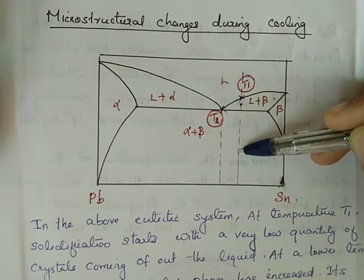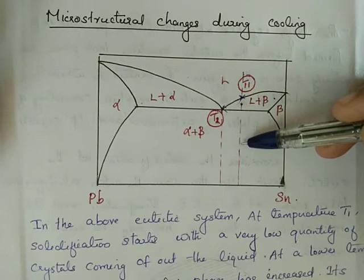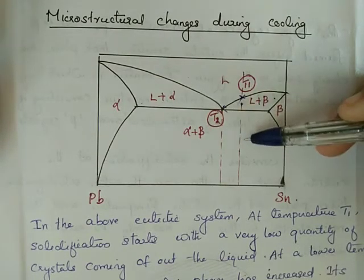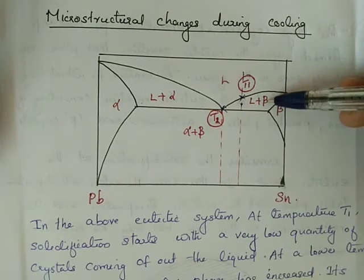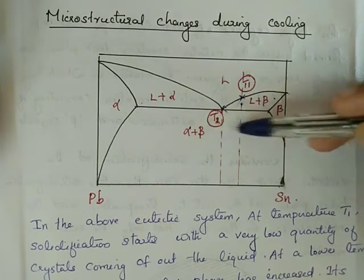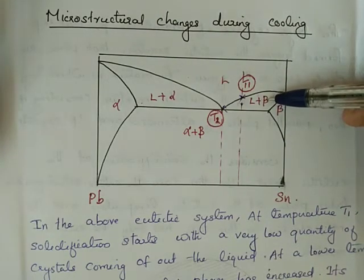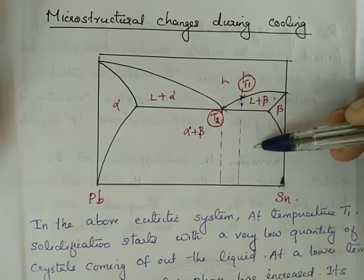We grow large sizes of beta particles in an alpha plus beta layered structure. The beta phase then transforms to alpha plus beta. In this stage, the initial beta is called beta prime, also referred to as pro-eutectic beta.